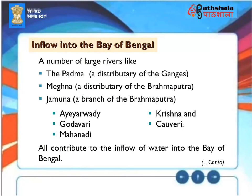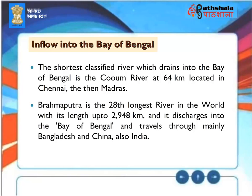A number of large rivers flow into the Bay of Bengal, including the Padma (a distributary of the Ganges), Meghna (a distributary of the Brahmaputra), Jamuna (a branch of the Brahmaputra), Ayeyarwady, Godavari, Mahanadi, Krishna and Kaveri. The shortest classified river draining into the Bay of Bengal is the Koovam River at 64 kilometers, located in Chennai. The Brahmaputra is the 28th longest river in the world, with a length of 2,948 kilometers, and discharges into the Bay of Bengal, flowing mainly through Bangladesh, China, and India.